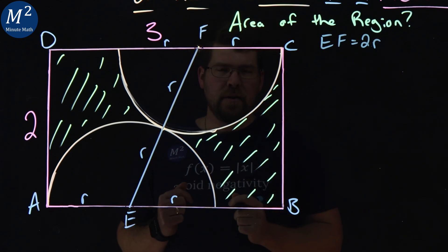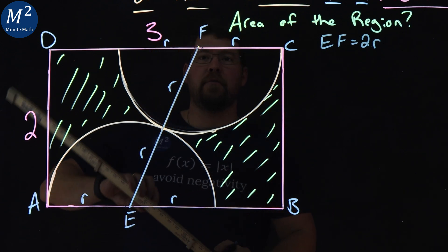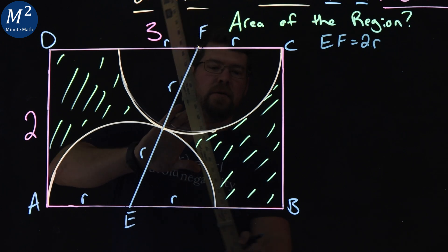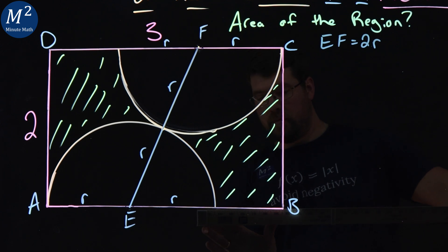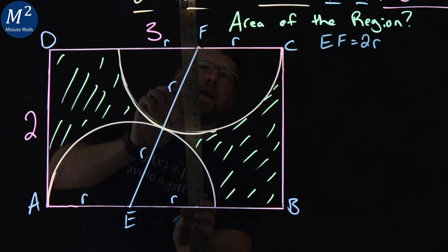Now from here, I'm going to drop a line straight down from F. Perfectly vertical, if I have the right angle here. Let's put it right there.